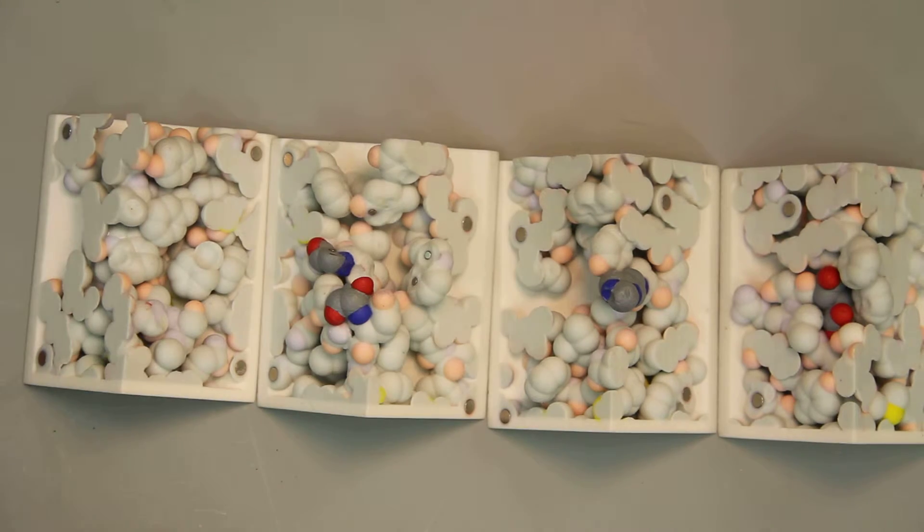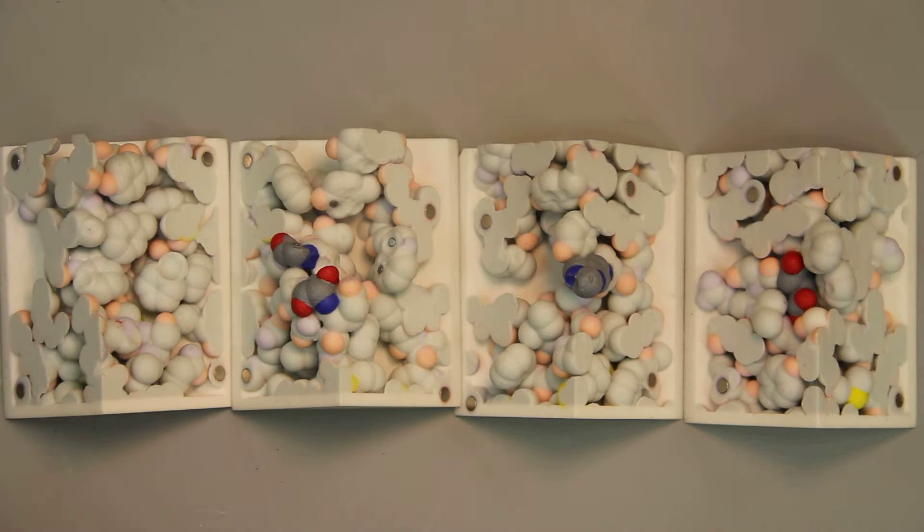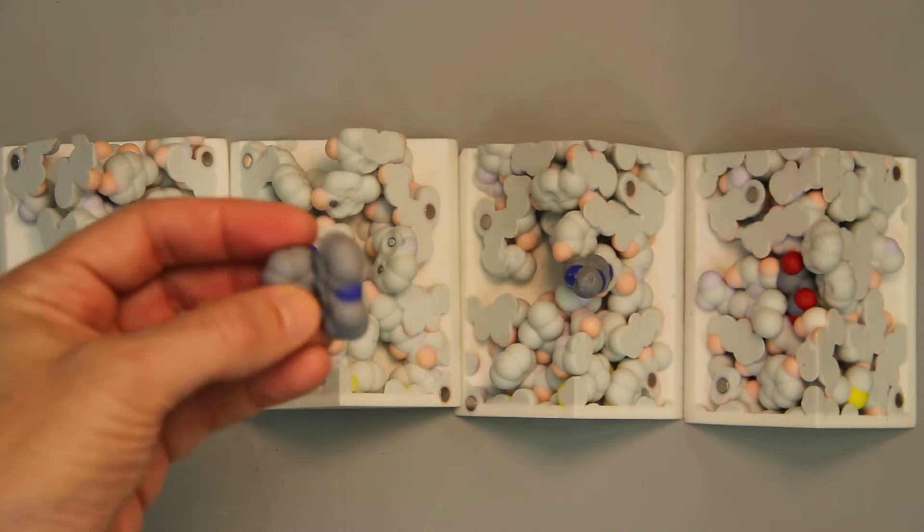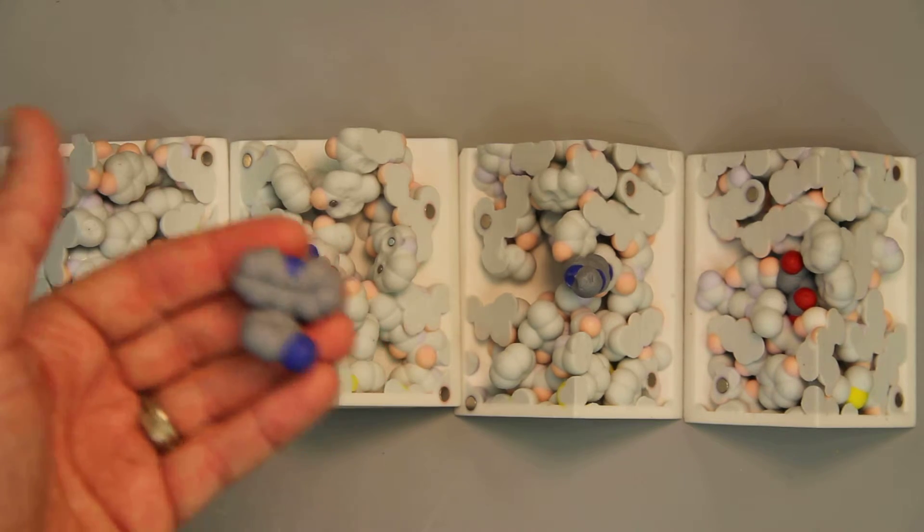This acetylcholinesterase is from the mosquito Culex pipiens. What has been shown in some populations that are resistant to carbamates, which this is a model, a 3D model of a carbamate pesticide.